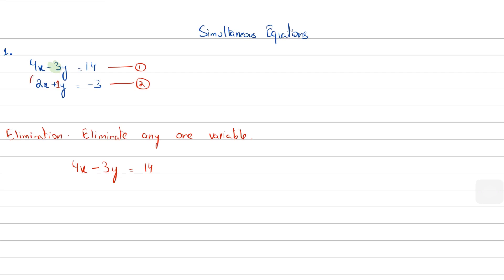The second equation I'm going to multiply by 3. Remember, we multiply all the terms by 3 — so 2x, y, and minus 3 all get multiplied. This becomes 6x plus 3y equals minus 9. Now I'm going to add the two equations. Minus 3y plus 3y gets eliminated, 4x plus 6x becomes 10x, and 14 minus 9 equals 5.